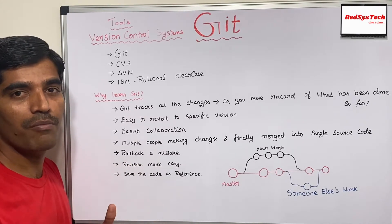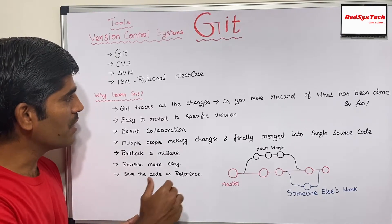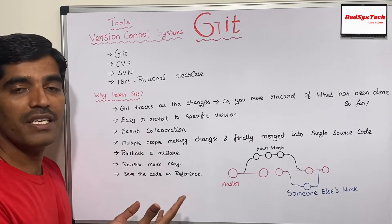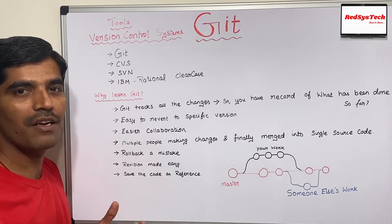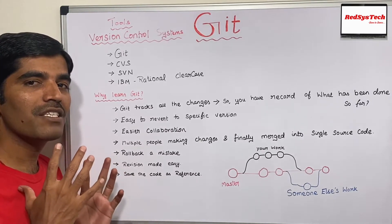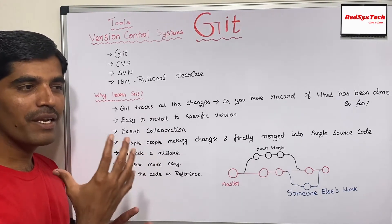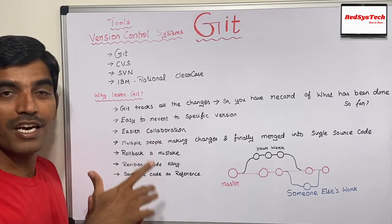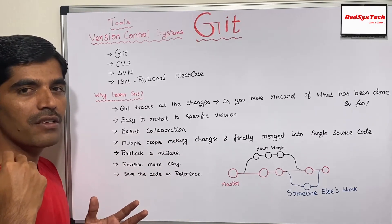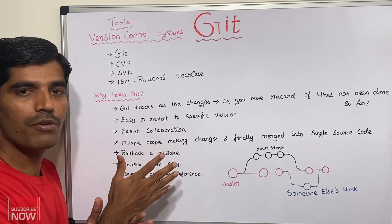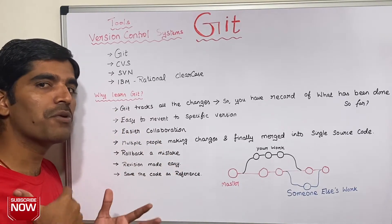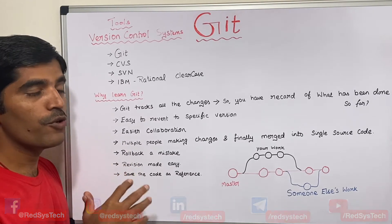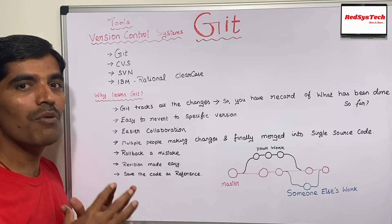It's very common to make mistakes during development, and if you want to roll back a mistake it is always possible with the help of Git. Revision is also made easy — it's very easy to understand what revision you made. Whenever you make a change to your code, that becomes a base reference. On top of it you create a branch and make your change. If that change doesn't work for you, you can always go back to your previous base version and start fresh. This is very flexible.